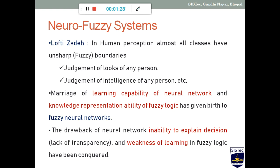We have already gone through two different techniques: neural network and fuzzy inference system. Both have certain limitations. The neural network does prediction, but the decision it takes is not always interpretable. Fuzzy systems have knowledge representation but lack learning capability. If we combine them — the learning capability of neural network with the knowledge representation capability of fuzzy logic — the drawbacks of each individual system can be overcome. The new technology formed by adding both is called fuzzy neural network.